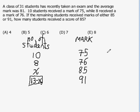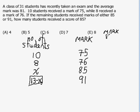We're going to use the same technique we used in the last example about the weight of American football players. We know that the average score here was 81, so what I'm going to do is subtract 81 from each of the marks.